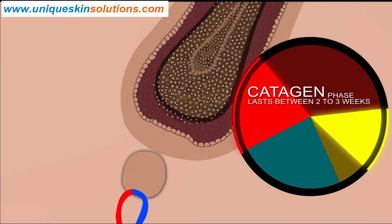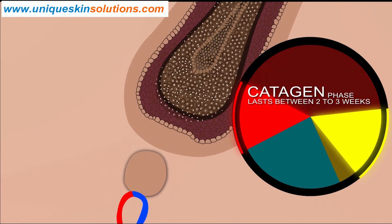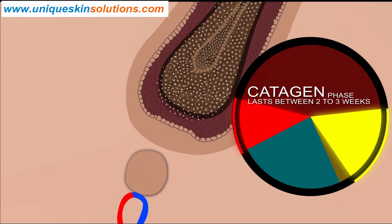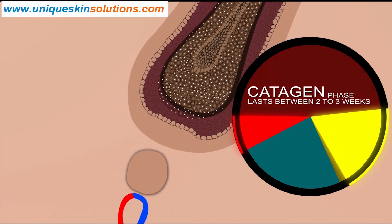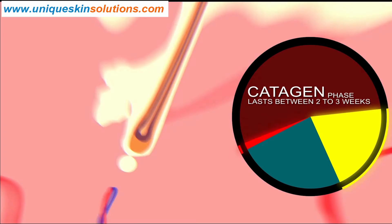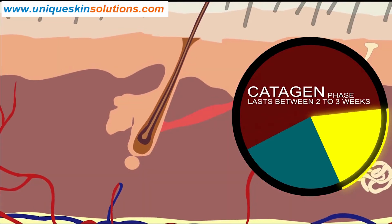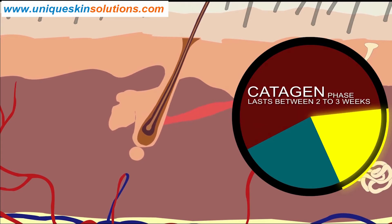You can appreciate how the hair follicle and dermal papillae begin to shrink in this phase. Finally, the hair follicle detaches from its blood supply. The catagen phase lasts for 2 weeks, and up to 1% of hairs in a normal scalp are in this stage.